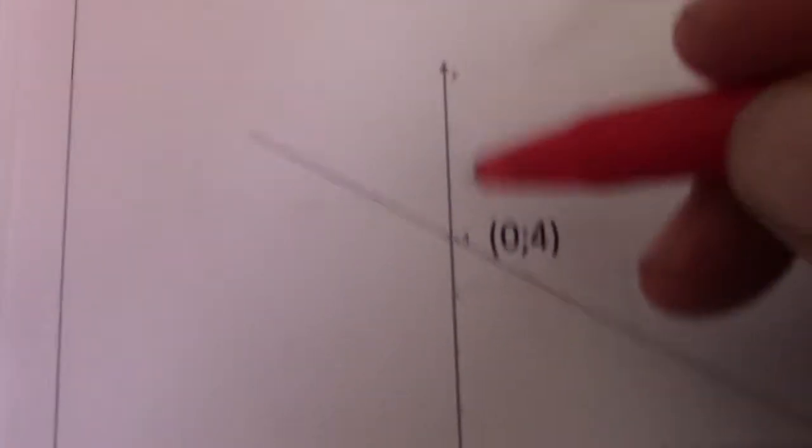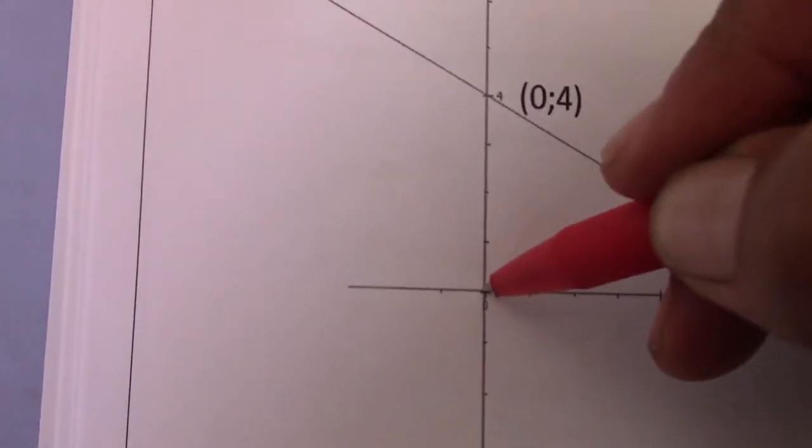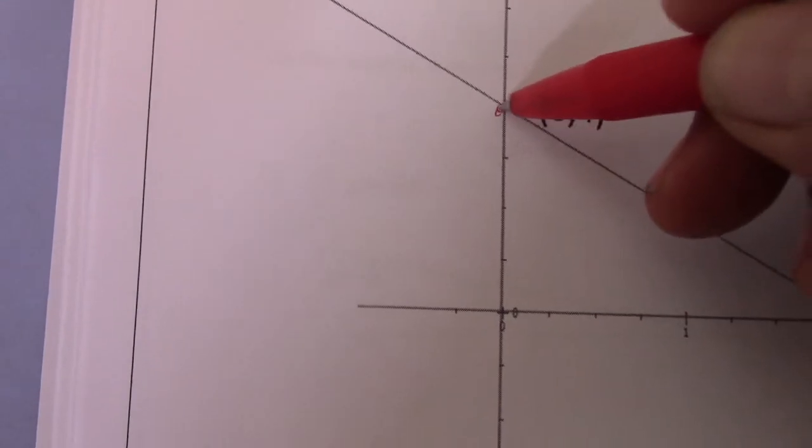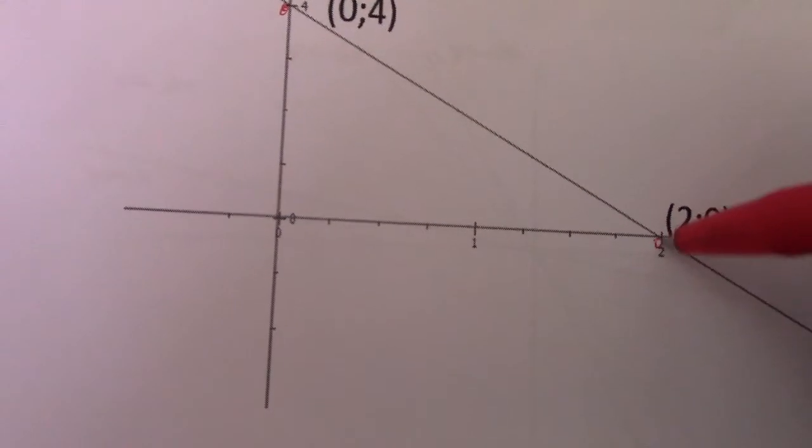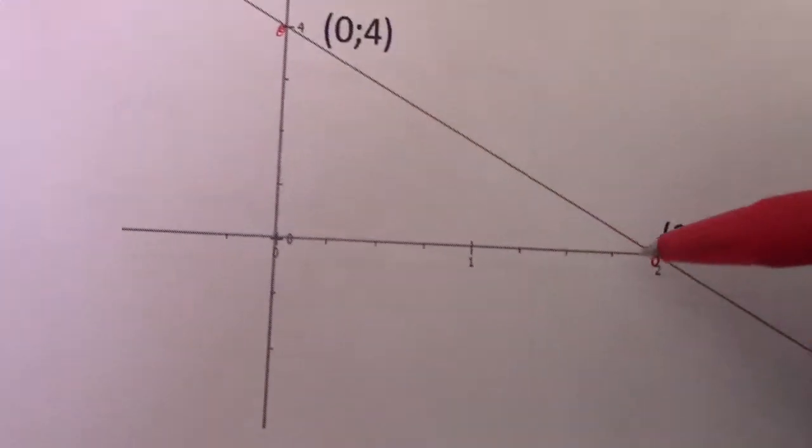So I plot. There you see my x value is 0, my y value is 4 at that point. There as you can see my x value is 2 and my y value is 0.